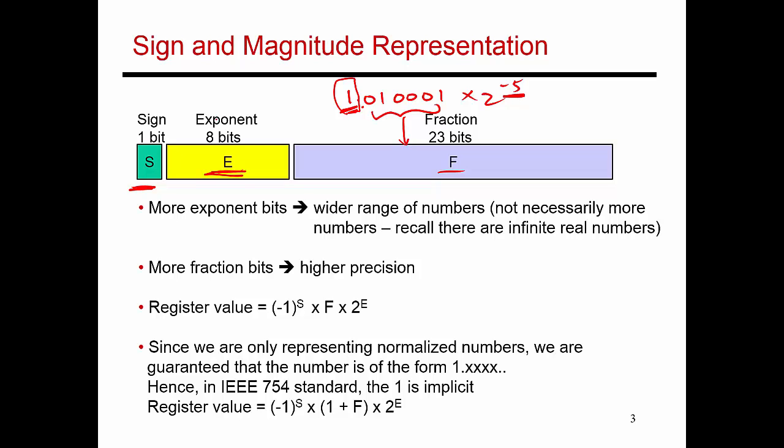So since the exponent term uses 8 bits, it can be used to represent numbers from 0 to 255. Or in this case, since I want to represent both very large numbers and very small numbers, I'm going to use those 8 bits to represent this range minus 127 up to plus 128. I can also do other variations, but this is what the IEEE 754 standard dictates.